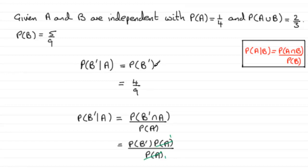That equals four ninths, which is the same result as before. So you can either use the formula or do it directly because the events are independent. Hopefully that gives you some idea of how to approach that part of the question.